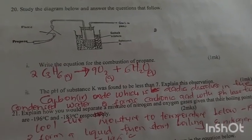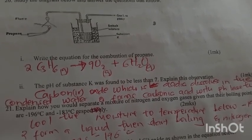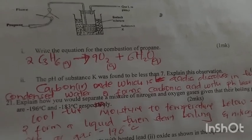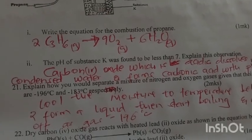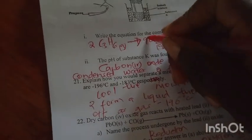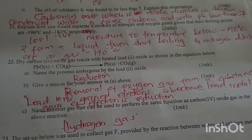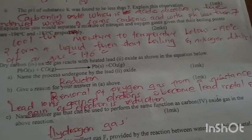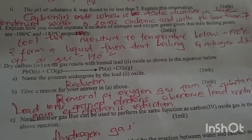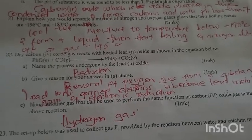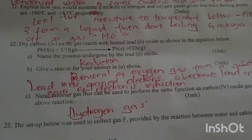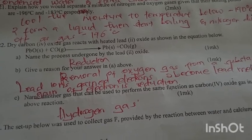Study the diagram and answer the questions. Write the equation for combustion of propane. Propane C3H8 will burn to form CO2 plus H2O. The pH of substance K was found to be less than seven. Explain. Carbon dioxide dissolves in the condensed water to form carbonic acid which has a pH of less than seven. Carbonic acid is a weak acid.